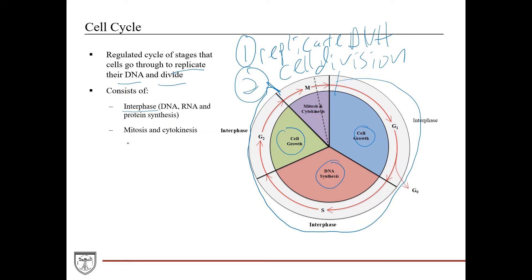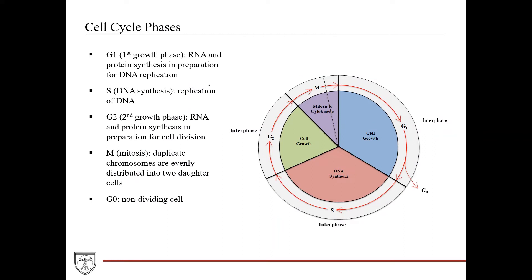Then you get into the M phase, which is mitosis and cytokinesis. The phases of the cell cycle specifically: you have G1, also known as the first growth phase, where you have RNA and protein synthesis in preparation for DNA synthesis during the S phase. After DNA is replicated, you proceed to the G2 phase, the second growth phase, with more RNA and protein synthesis in preparation for cell division. In gametes this would be meiosis, but for the majority of cells we refer to it as mitosis.